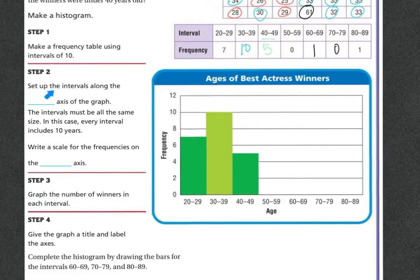Step 2, set up the intervals along the horizontal axis of the graph. Remember horizontal is this way, just like the horizon. So the intervals must be all the same size, in this case every 10 years. The intervals are every 10 years. So we've set those up along the bottom.